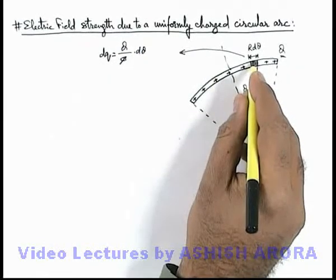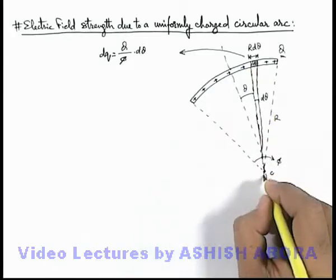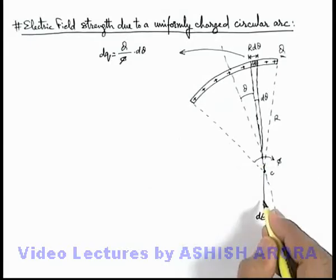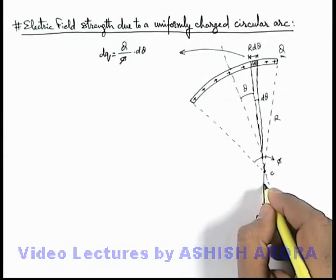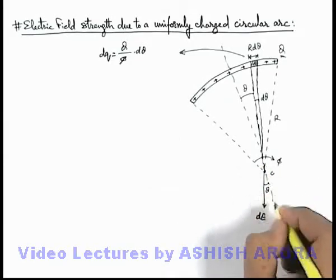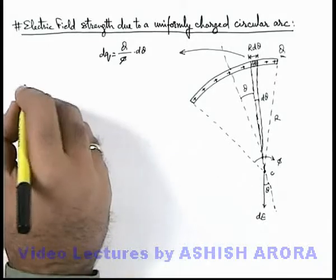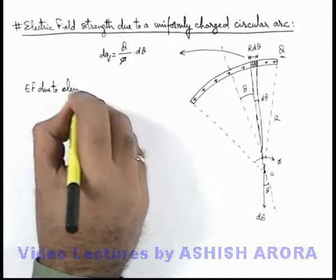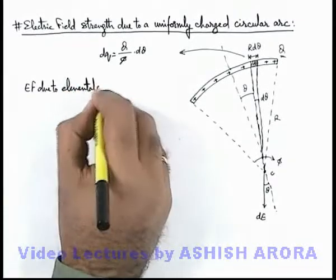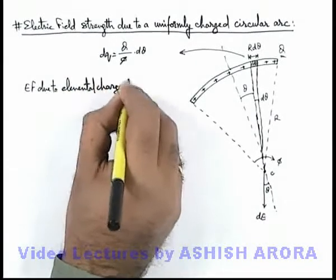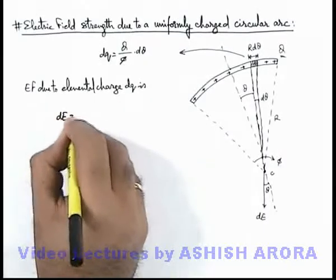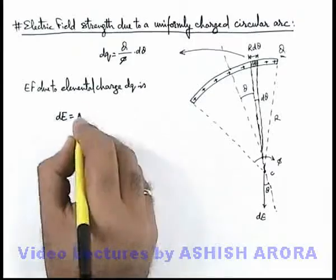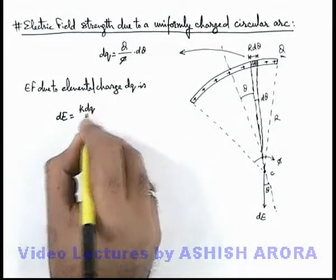This can be taken as a point charge due to which electric field at center will exist in the direction directed away from the element, of magnitude dE at the same angle theta from the central line. So we can write electric field due to elemental charge dq is dE, which can be written as by using the electric field due to a point charge, that is k dq by r square.